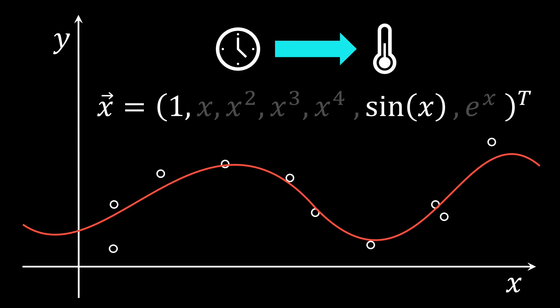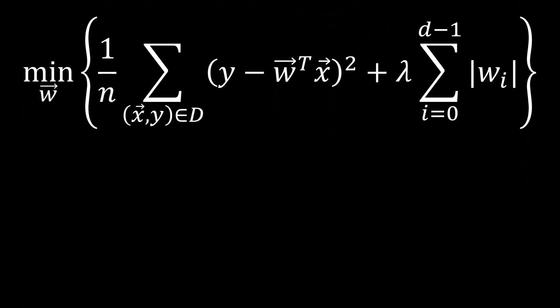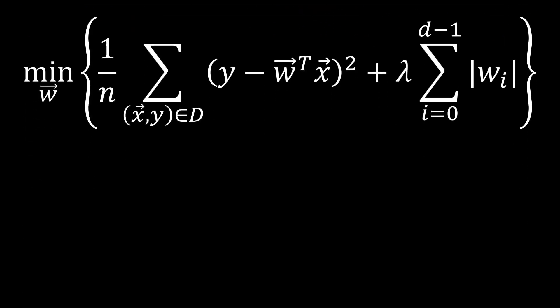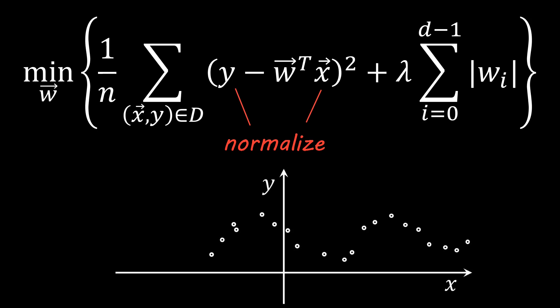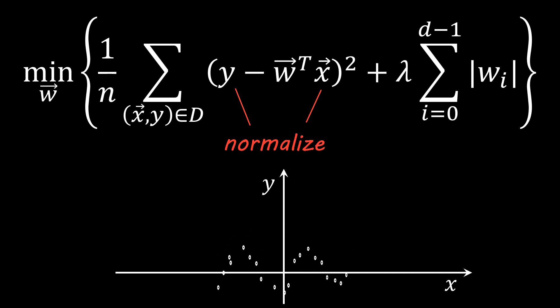Let us go back to the formula and note a few things that are important to make this work in practice. It is important to normalize the features and targets by subtracting the mean and dividing by the standard deviation. Visually this centers and scales our data. This ensures that the coefficient of every feature is not influenced by its magnitude. Note that at prediction time we can simply invert these transformations to get an actual prediction.